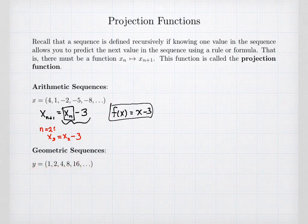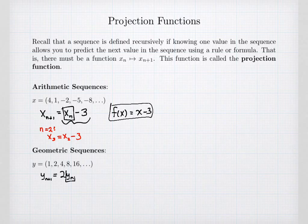If I consider the geometric sequence 1, 2, 4, 8, 16, we see that each time we double: the next value in the sequence is double the current value. That means the projection function, given any input x, outputs double the input — f(x) = 2x. This is the rule that defines the sequence.